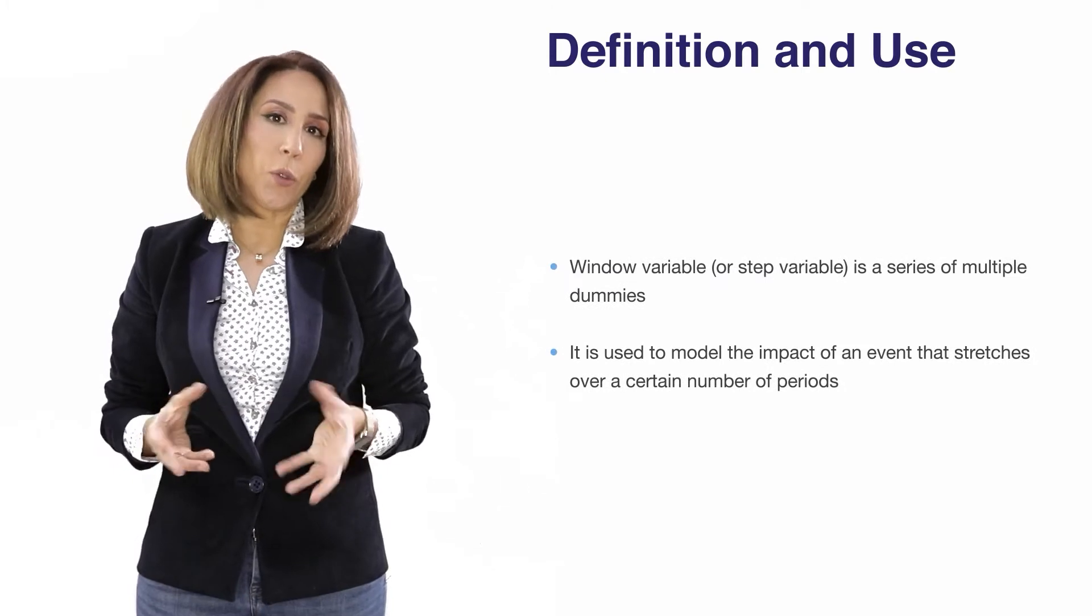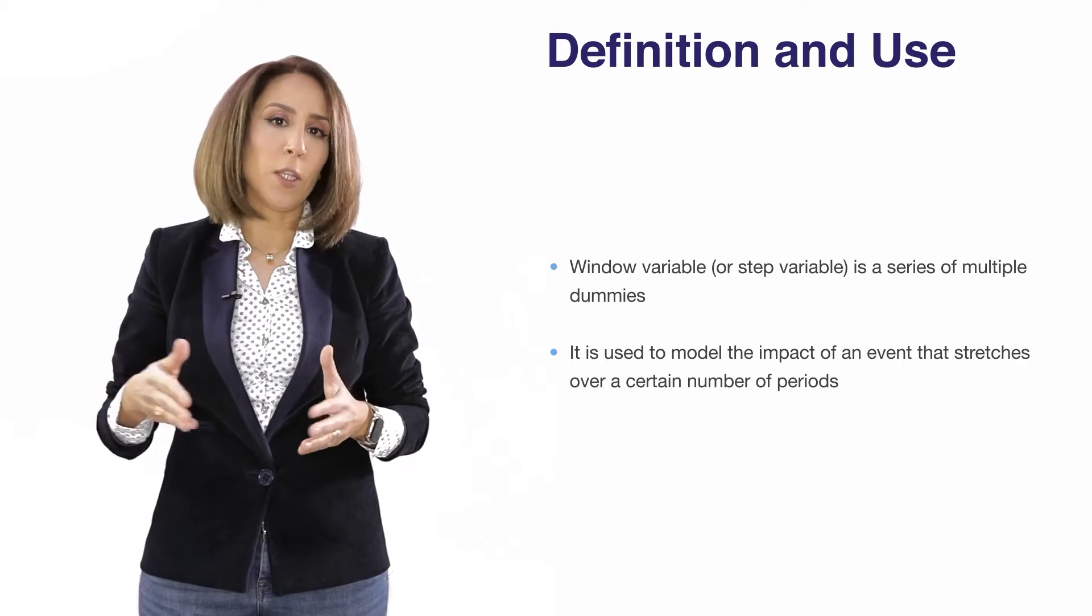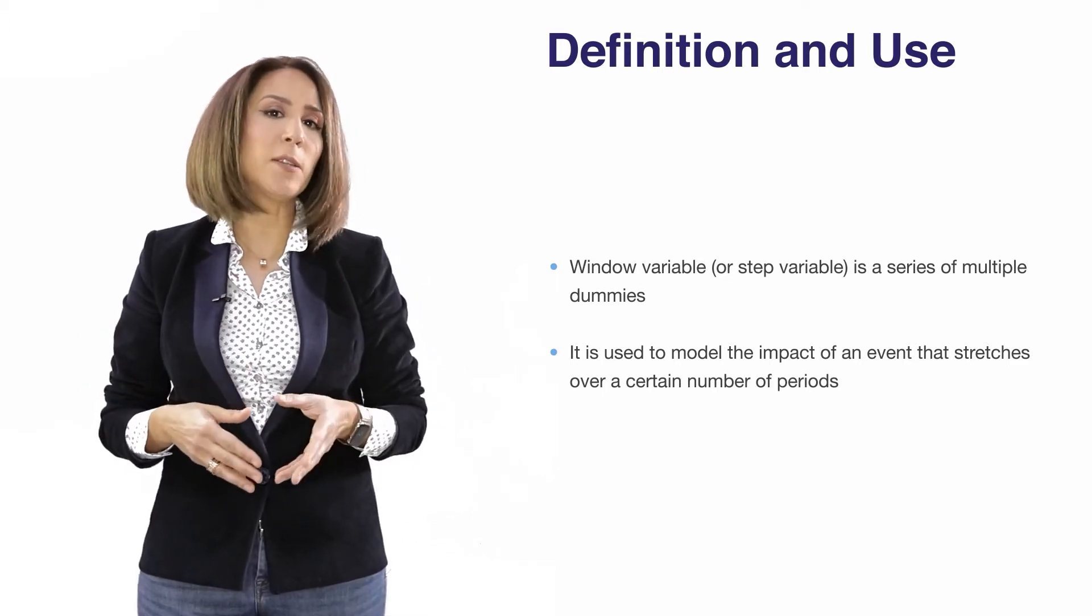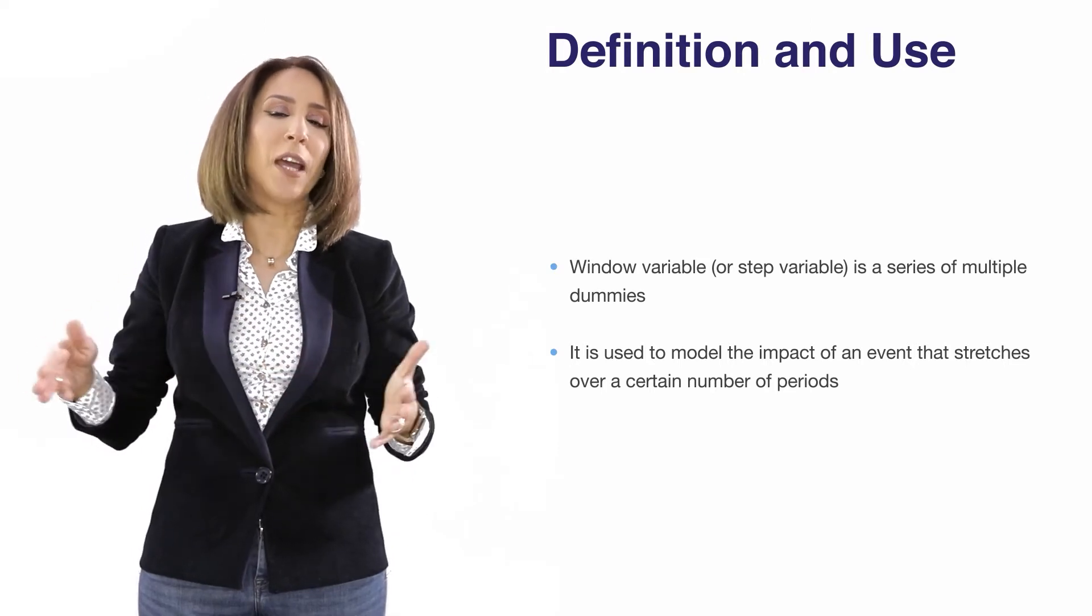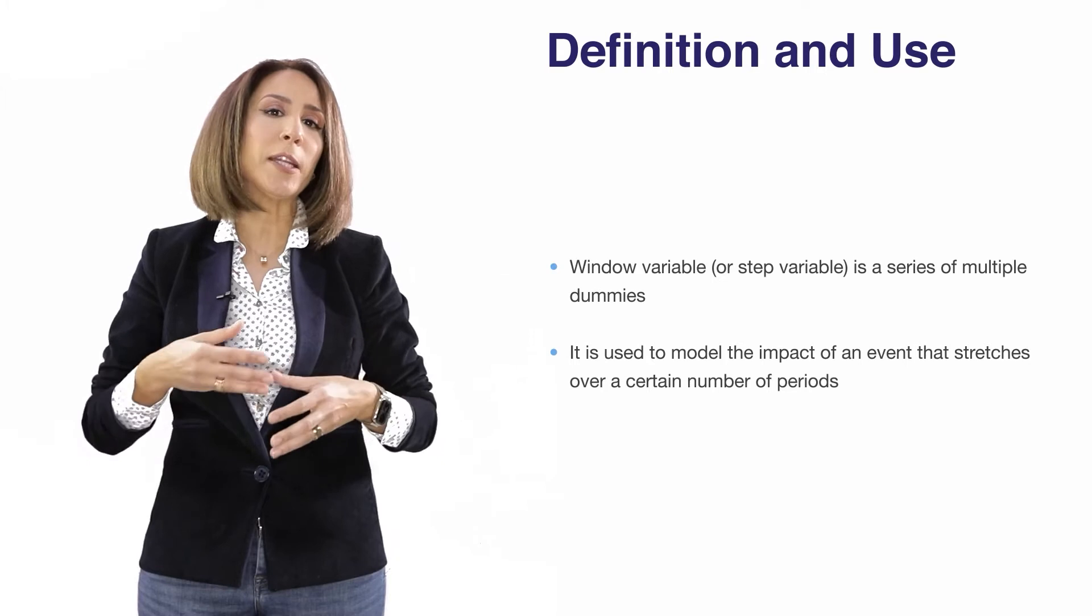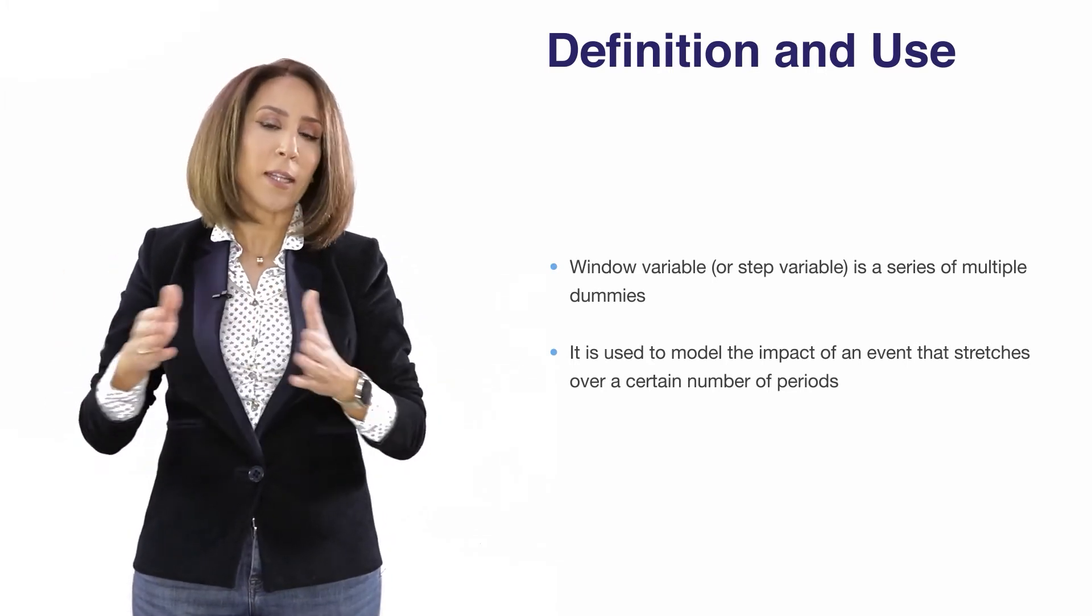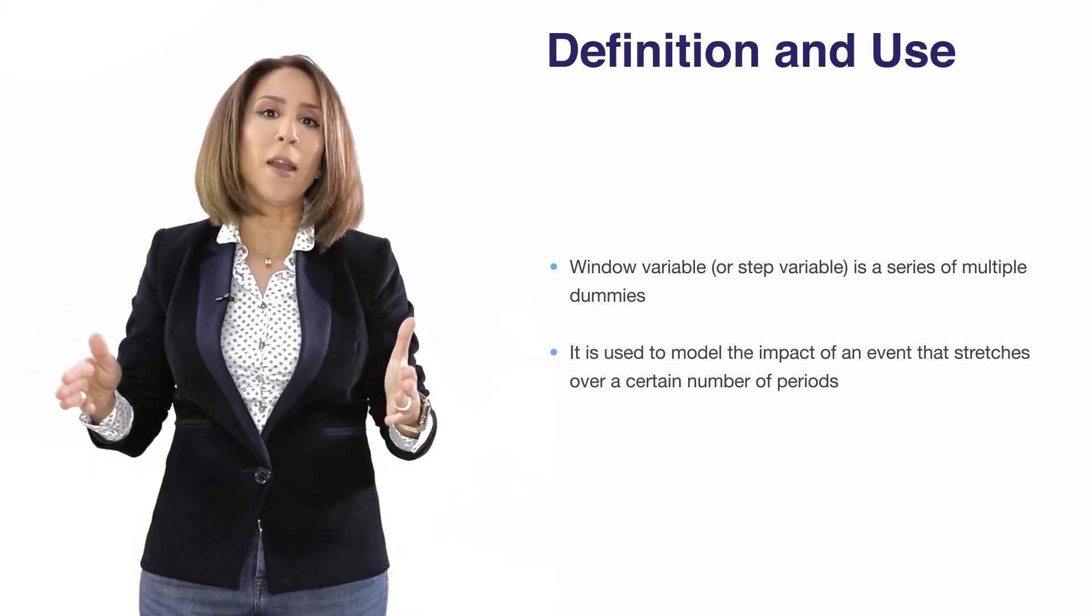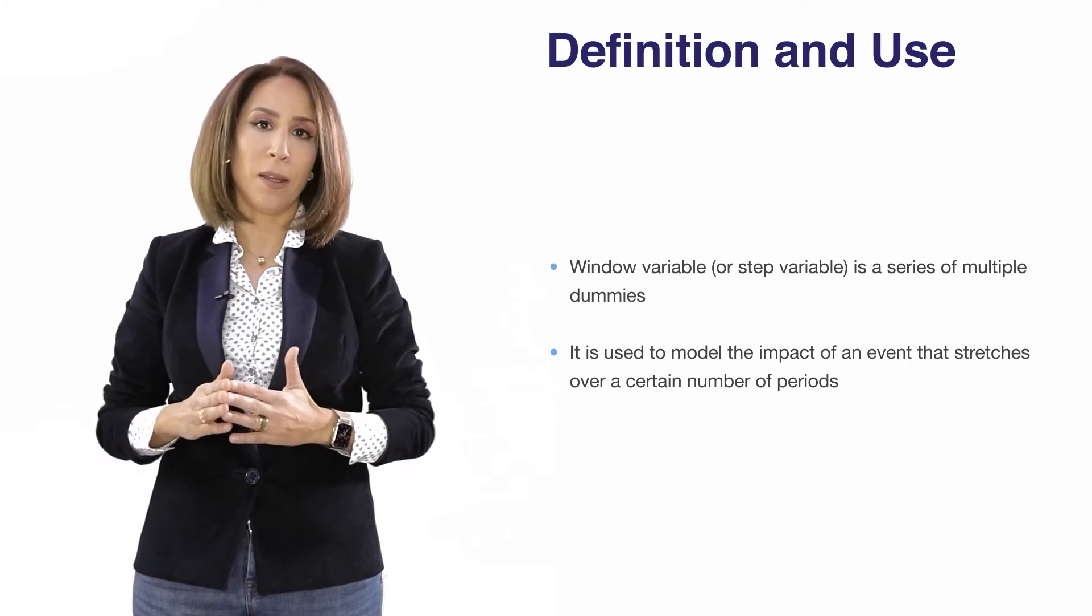Windows. We generally create windows in order to model factors or variables that stretch over time. So a dummy is for one period, one week for example, or one month, or we can have a series of four dummies in four separate periods. Whereas when we want to create a window, it means that we have a successive sequence of dummies and that means that there is an event that is stretching over time, for which we need to create a window in order to consider it in the modeling phase.